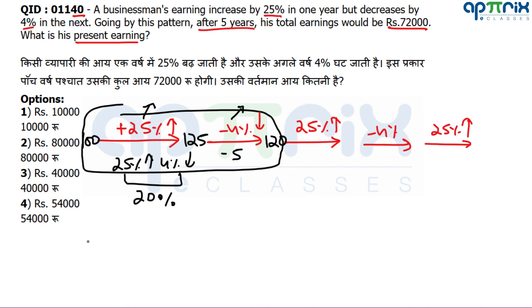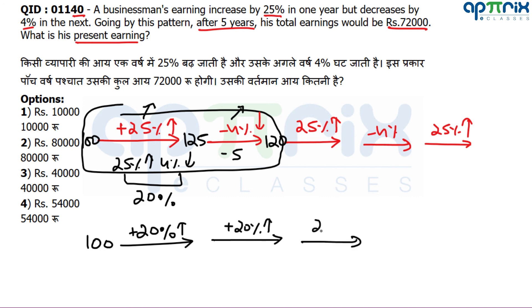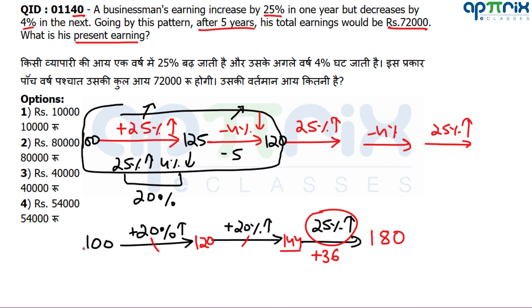Summarizing: every 2 years gives a 20% increase. Two such cycles (4 years) = 20% twice = 44% increase. So 100 → 120 → 144. Then the 5th year has one more 25% increase: 144 × 1.25 = 180. So the multiplier from present earnings to final earnings is 180/100 = 1.8.